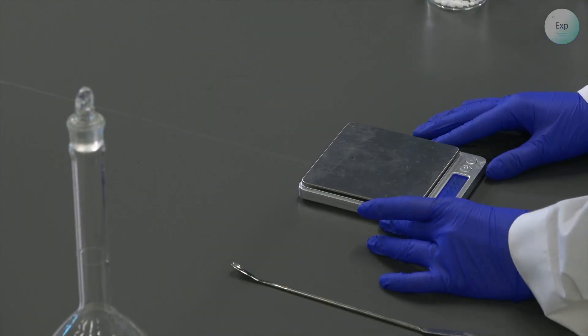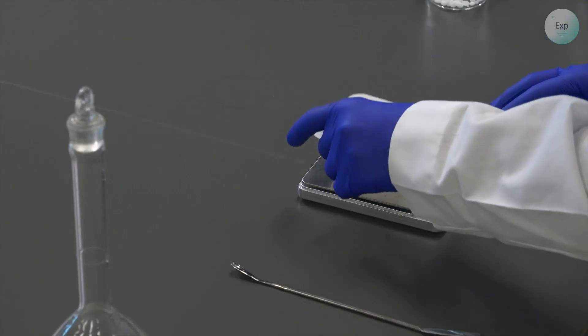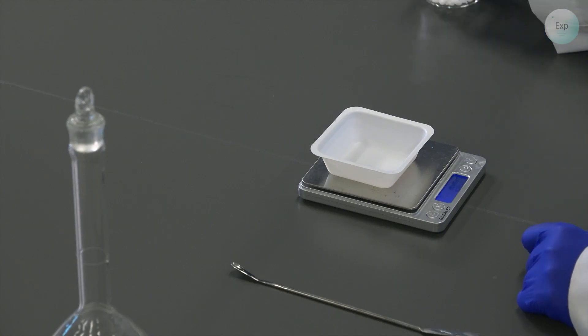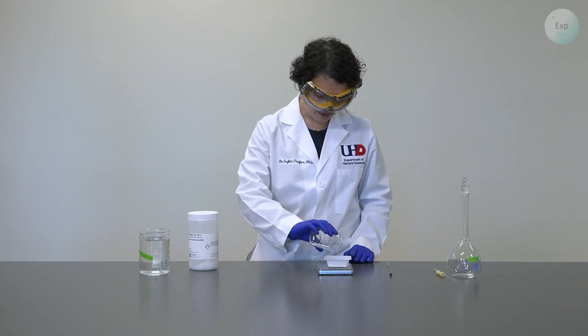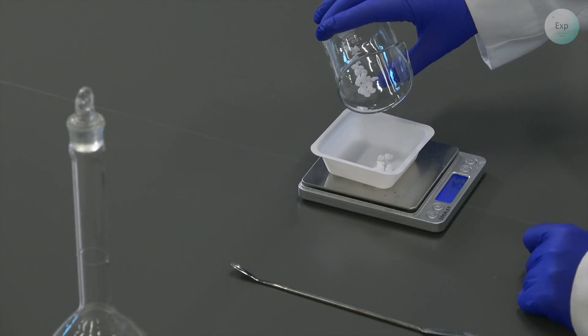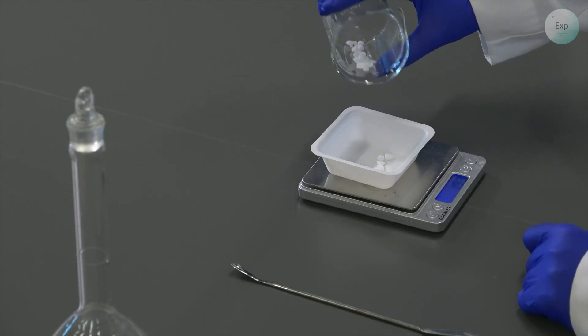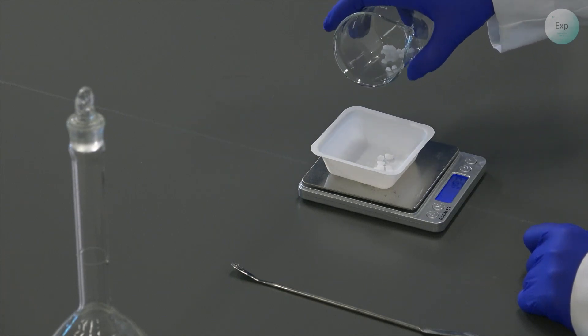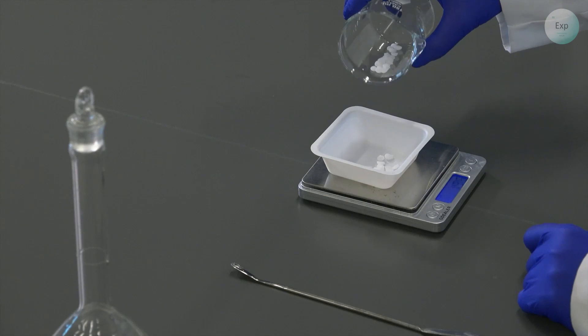Next, we turn on our scale, place our weighing boat on top, tare, and then transfer two grams of the sodium hydroxide pellets on it. We need to stop when we are relatively close to the two grams. So if it's a little under or a little over, that is acceptable, just not too much.